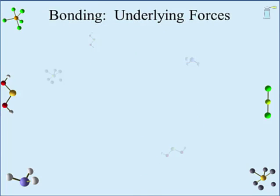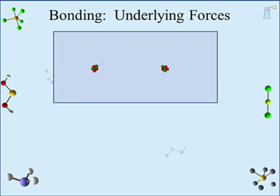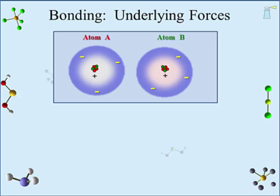Before we get to the types of bonds, we should look at the underlying forces that compel certain atoms to join. We will not need to introduce any new forces — the forces within an atom will be sufficient. Consider two generic atoms, atom A and atom B. They both have positively charged protons in their nuclei. Since atoms are neutral, each atom will have the same number of negatively charged electrons as protons. Electrons are zipping around the nucleus, so we will draw that movement as an electron cloud, giving the atoms a proper volume.